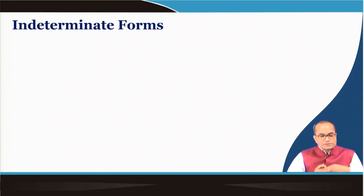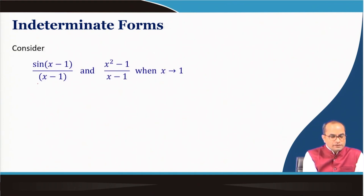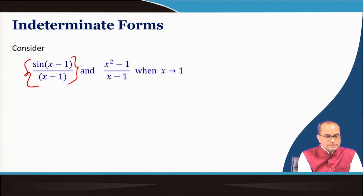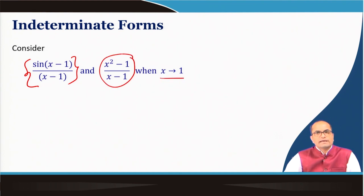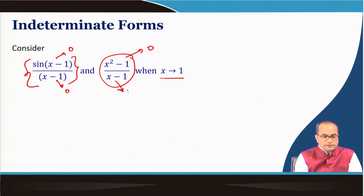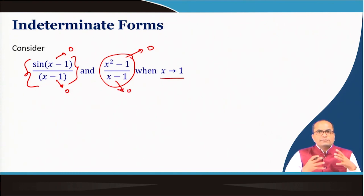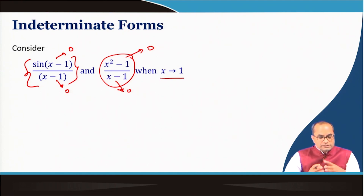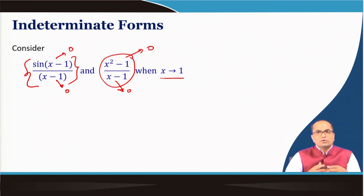Coming back to indeterminate forms. There are various situations — for instance, if we have been asked to evaluate sin(x) − 1 divided by x − 1 as x approaches 1, or x² − 1 divided by x − 1 as x approaches 1. What is happening here is that the numerator is also getting 0 and the denominator is also going to 0 as x approaches 1. So we are not getting any meaningful value of this term as such. In this lecture we will discuss how to find the limit for such expressions where numerator and denominator both are going to 0.